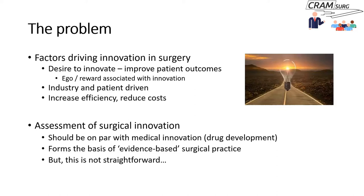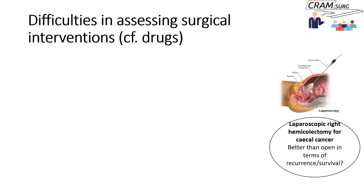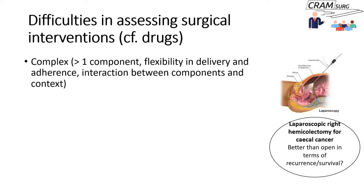However, there are some problems — assessment of surgical innovation is not straightforward. Consider the example of assessing laparoscopic right hemicolectomy for colorectal cancer versus open surgery in terms of recurrence and survival. Surgical interventions are complex, and complex interventions are particularly difficult to assess. As described by the Medical Research Council, a complex intervention includes more than one component, with flexibility in delivery and adherence, and interactions between components and context.